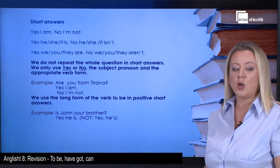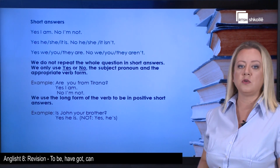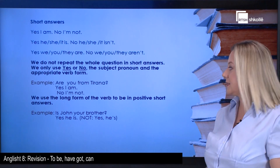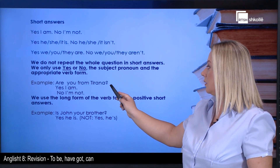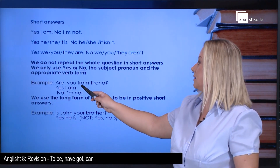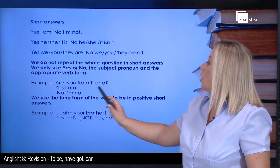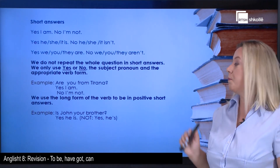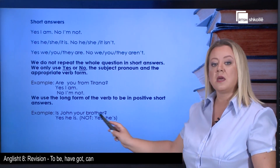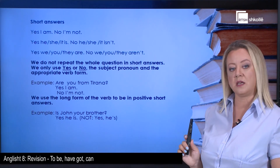For short answers, we do not repeat the whole question. We only use yes or no, the subject pronoun, and the appropriate verb form. For example: Are you from Tirana? Yes, I am. No, I'm not. We do not say 'Yes, I am from Tirana.' In positive short answers we use the long form — for example: Is John your brother? Yes, he is. Be careful — 'Yes, he's' is wrong.